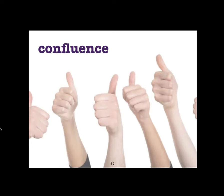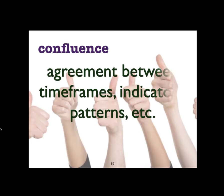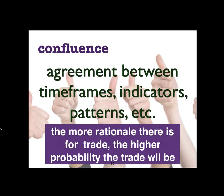There is one key word that increases the chances of successful trades from start to finish — that word is confluence. Confluence is an agreement: an agreement between time frames, indicators, chart patterns, etc. The more rationale there is for a trade, the higher probability that trade will be. Just because the RSI tells you it's oversold does not mean you should buy it — you have to find more reasons using other technical tools to back up the RSI, because even technical indicators are not 100% certain.